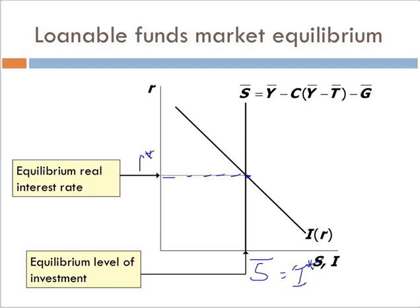One important thing to realize is that equilibrium in the goods market — aggregate supply and aggregate demand — implies that the loanable funds market is also in equilibrium. The factor that equilibrates all of these systems is R. R changes in order to bring them into equilibrium. So the R that makes the loanable funds framework equilibrate also puts the goods market in equilibrium. That concludes our discussions for Lecture 5 and Chapter 3.